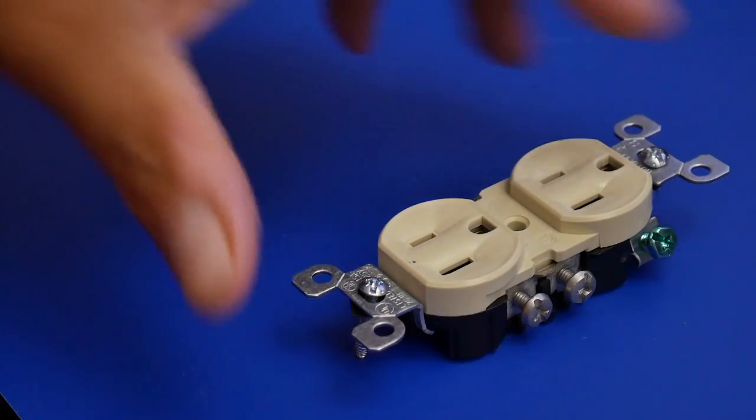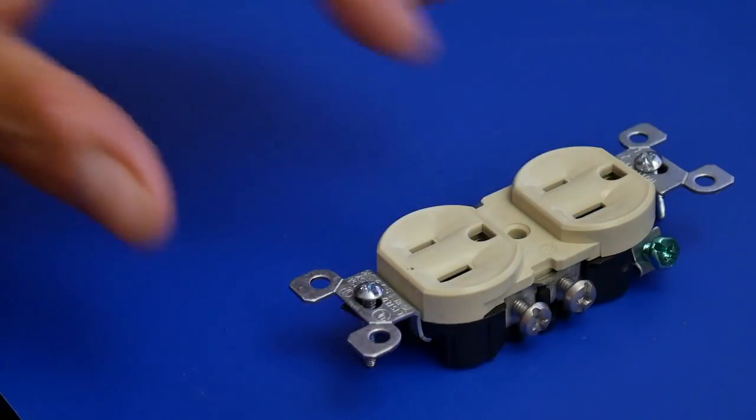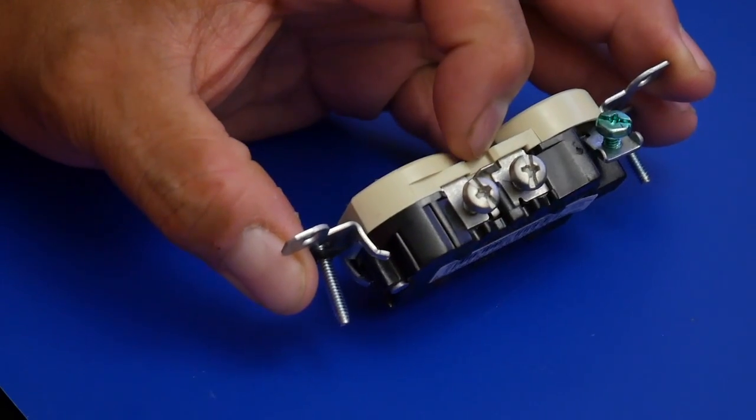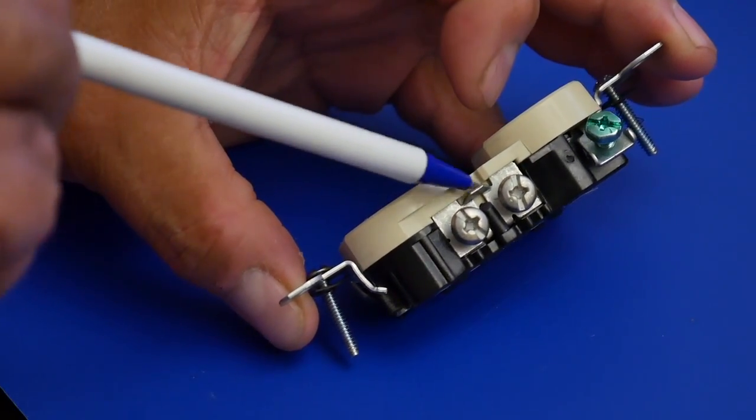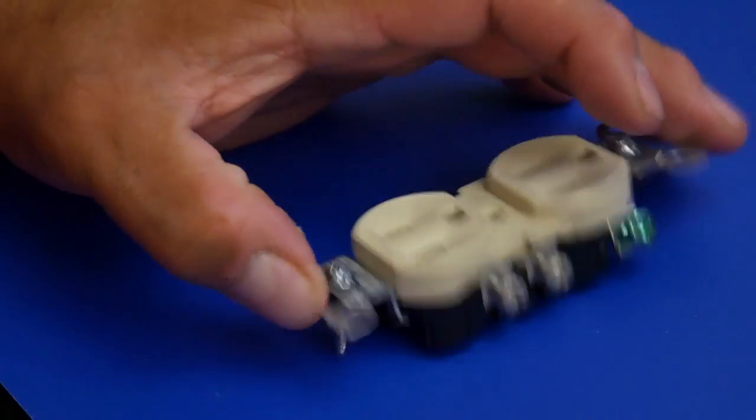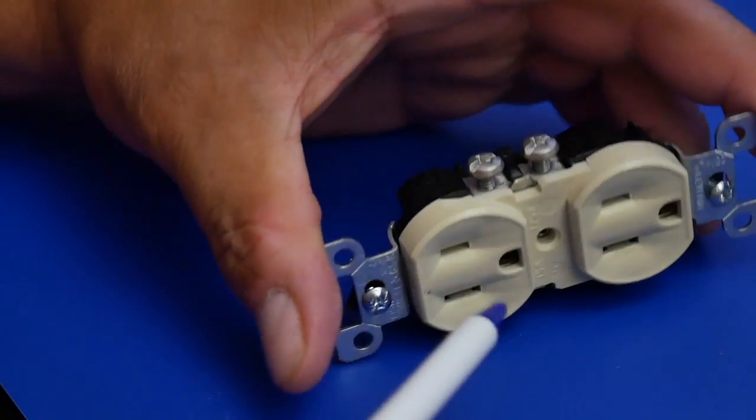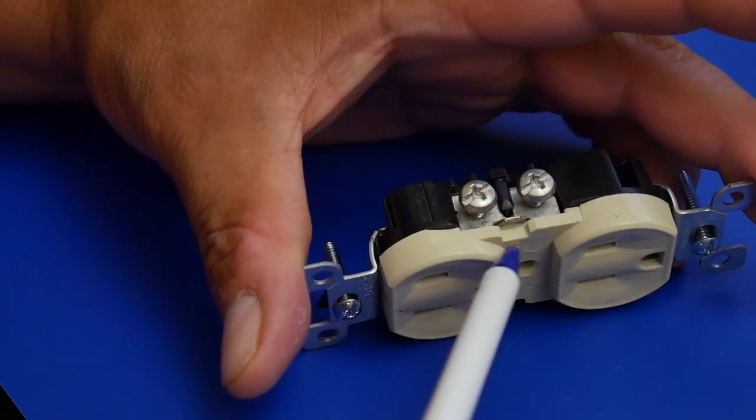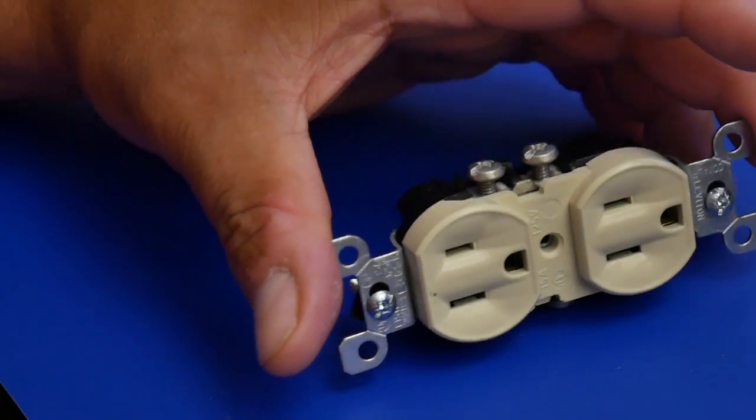On the hot side and the neutral side, there's a little tab right here. I'm hoping you can see that, a little tab right there. There's one on the other side, right here. Okay. Those tabs can be broken off.